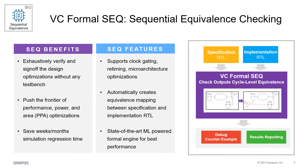When comparing two designs using VC Formal Seq, one of the designs is designated as the specification and the other as the implementation. The implementation could include clock gating insertion, retiming, and microarchitecture optimizations — these changes should not affect the functionality of the design. VC Formal Seq automatically creates equivalence mapping points between the specification and implementation RTL and verifies their equivalence using formal technology.